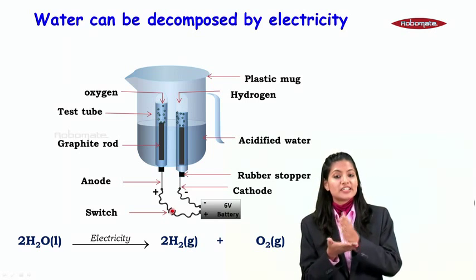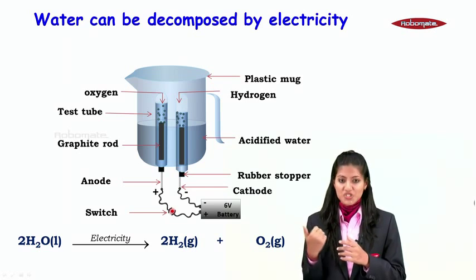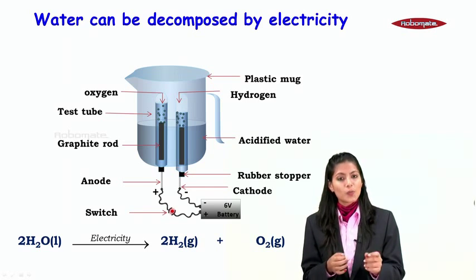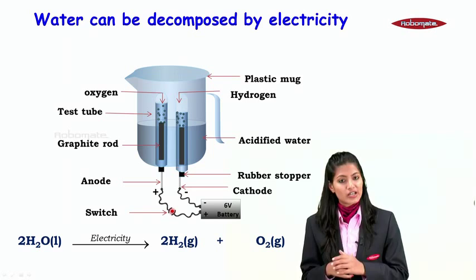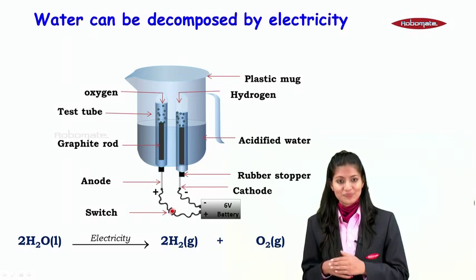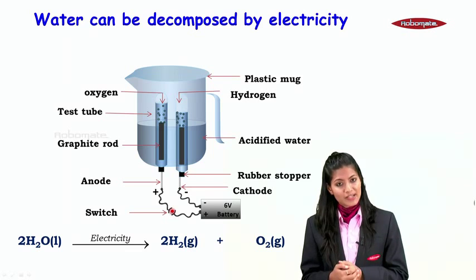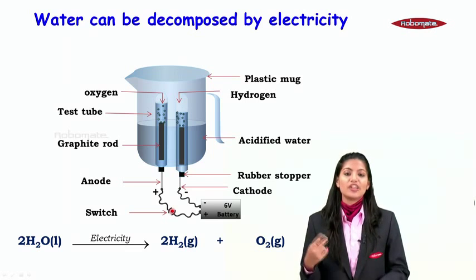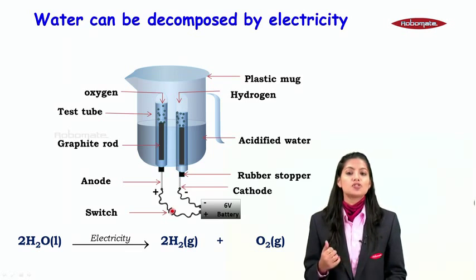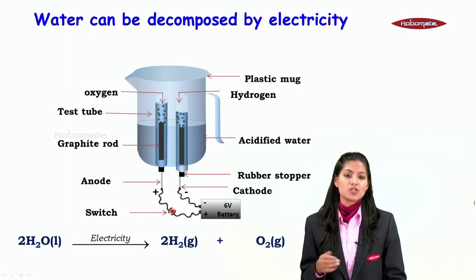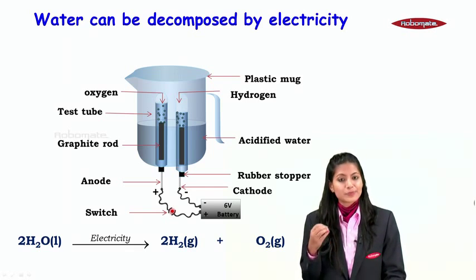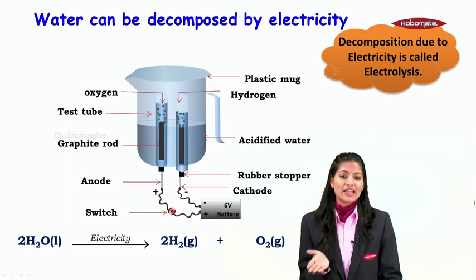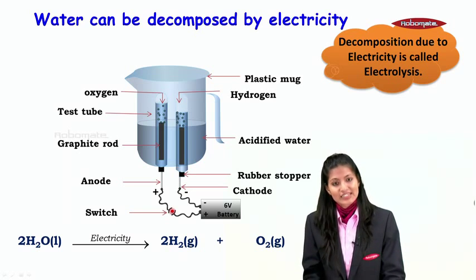So there was a splitting up process because from one reactant that is H2O we got two simpler products, H2 and O2. So there was a decomposition reaction taking place, but it took place only because of supply of electric current or electricity. Reaction needs to be balanced. So 2H2O should give you 2H2 + O2. Such kind of decomposition reaction which takes place due to electricity is called electrolysis, also called electrolytic decomposition.